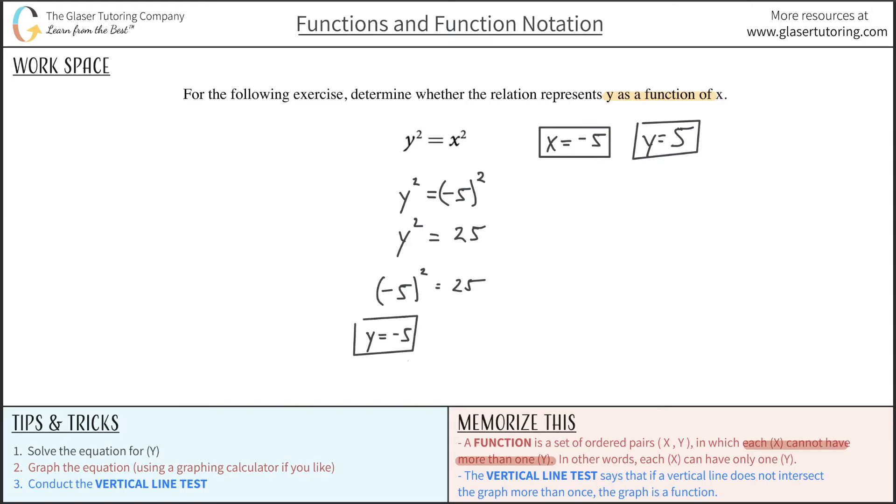Now therein lies the problem. Why is that a problem? Because that violates the definition of what a function is. The definition of a function tells us that this x of negative 5 cannot have two different y values associated with it. But it does, in this case. So being that that's the case, this equation at the top that they gave us, we can definitively state is not a function.